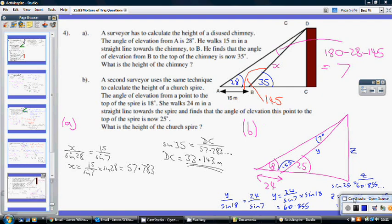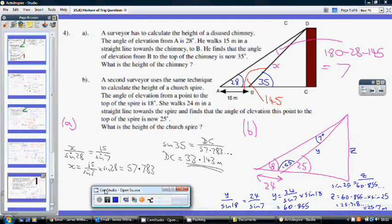Now, part B, as far as I can see, just seems to be exactly the same type of question, but you just had to draw the diagram from scratch. So, we've got this angle being 18. She walks in 25 metres and then the angle then becomes 25. So, we're following exactly the same process. So, we work out this length, which I've called Y, by saying Y over sin 18 equals 24 over sin 7. And where did the 7 come from?